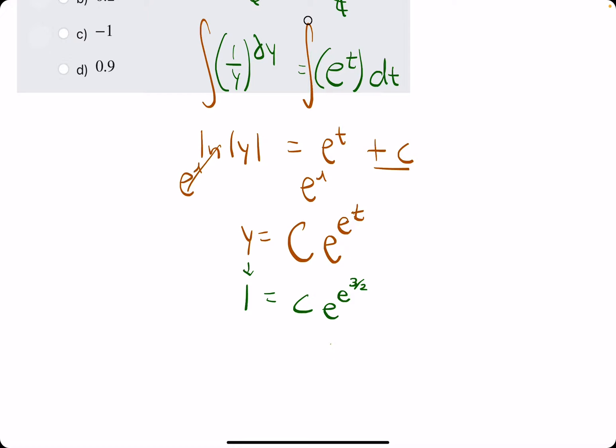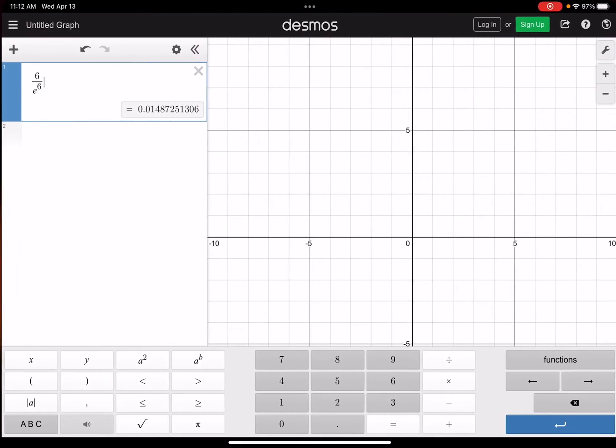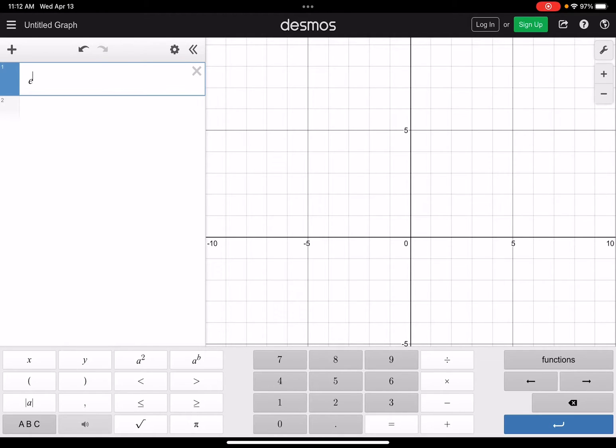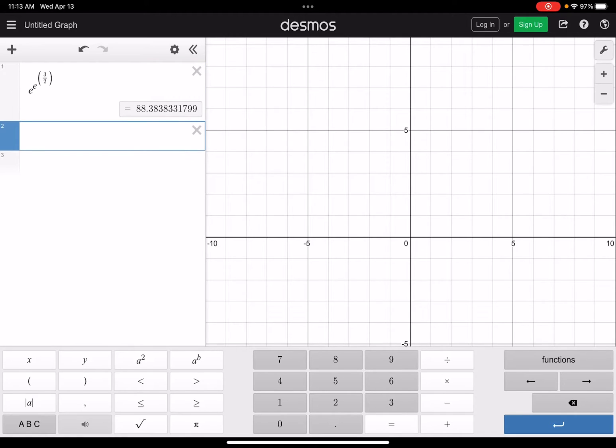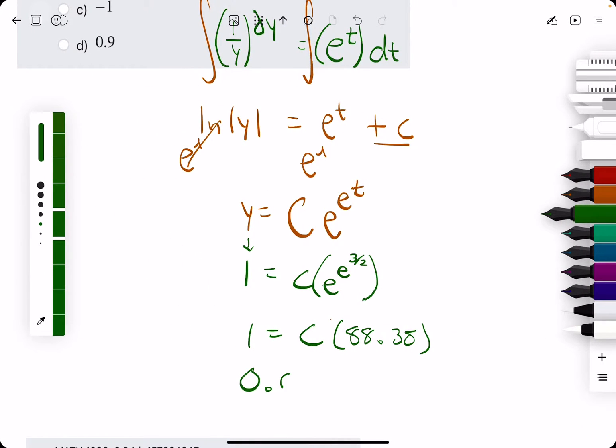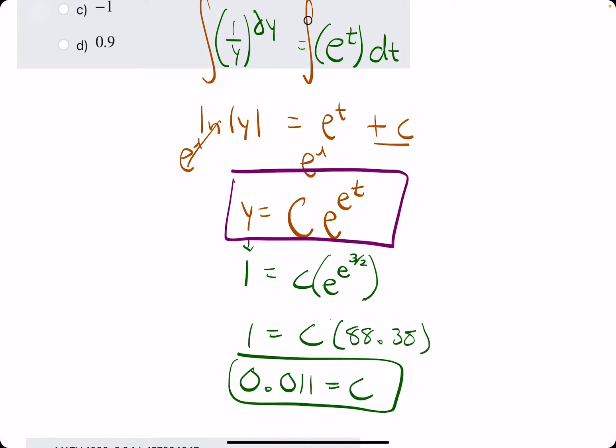All right. So basically, what we're going to do is solve for c by dividing by whatever this equals. So what I might do actually, let's go ahead and calculate what e raised to the e raised to the 3 over 2 is. So we have e to the e to the 3 over 2. So we get 88.38. So we want to divide 1 by 88.38, and we get 0.011 equals c. So we have our c value.